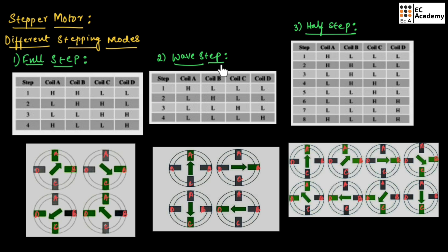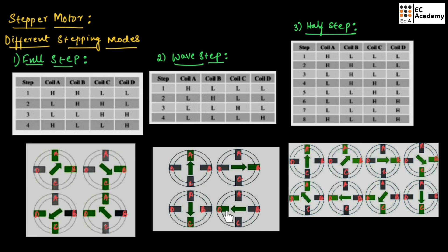Now let us understand the wave step stepping mode. In wave step mode, there are also 4 steps. Comparing with full step — in full step we energize 2 coils, whereas in wave step we energize only 1 coil at a time. In step 1, coil A is energized and the rotor moves towards coil A. If coil B is high, the rotor moves towards coil B. If coil C is high, the rotor moves towards coil C. And if coil D is high, the rotor moves towards coil D.